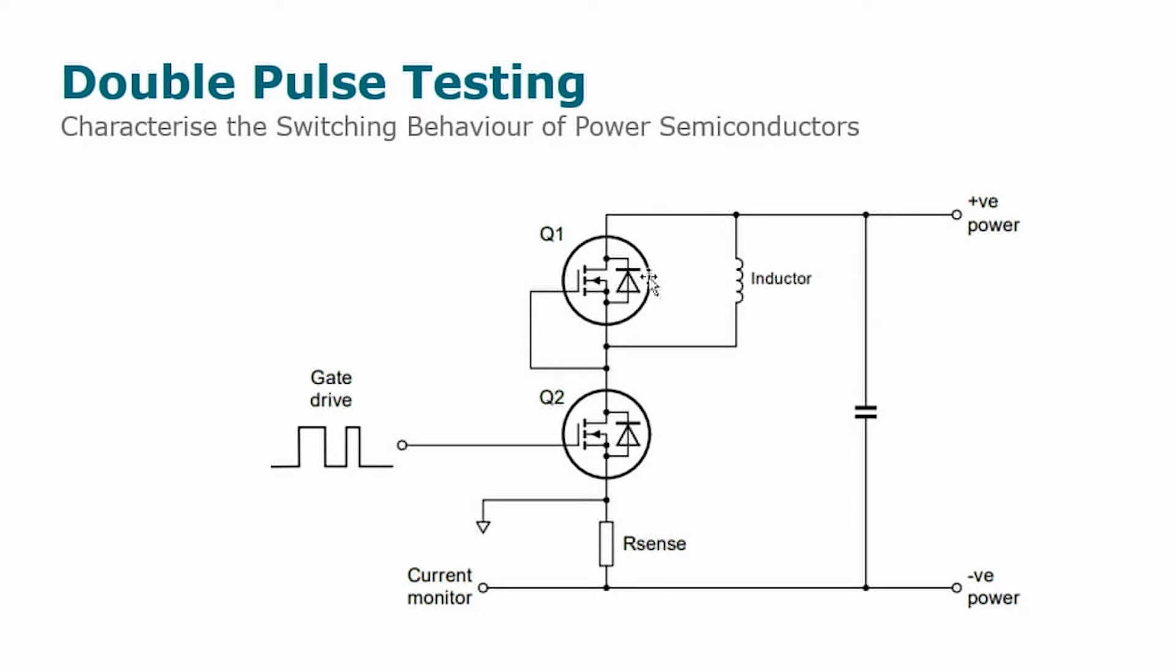This reverse recovery signal will interact with the parasitics of the PCB board and with the parasitics of the MOSFET, and will have an impact on the electromagnetic emission of your circuit because it may cause voltage and current overshooting in your circuit.